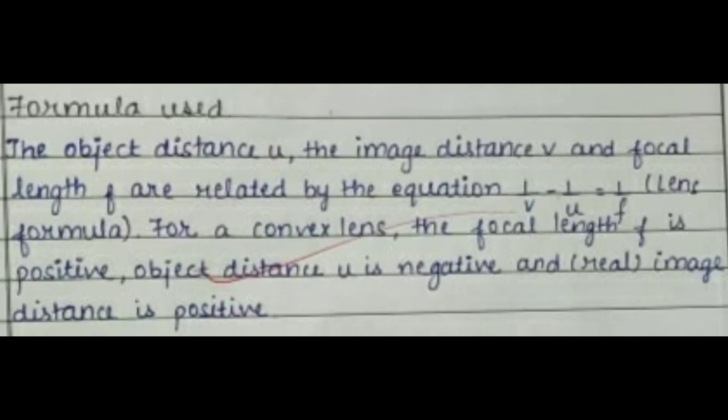This image shows the formula used for finding the focal length of a convex lens. We have used the lens formula, that is 1/v minus 1/u is equal to 1/f. Here v stands for distance of image, u for distance of object, and f for focal length, and all of them are respective to the distance from the convex lens. u is always negative and v for the real image is positive.